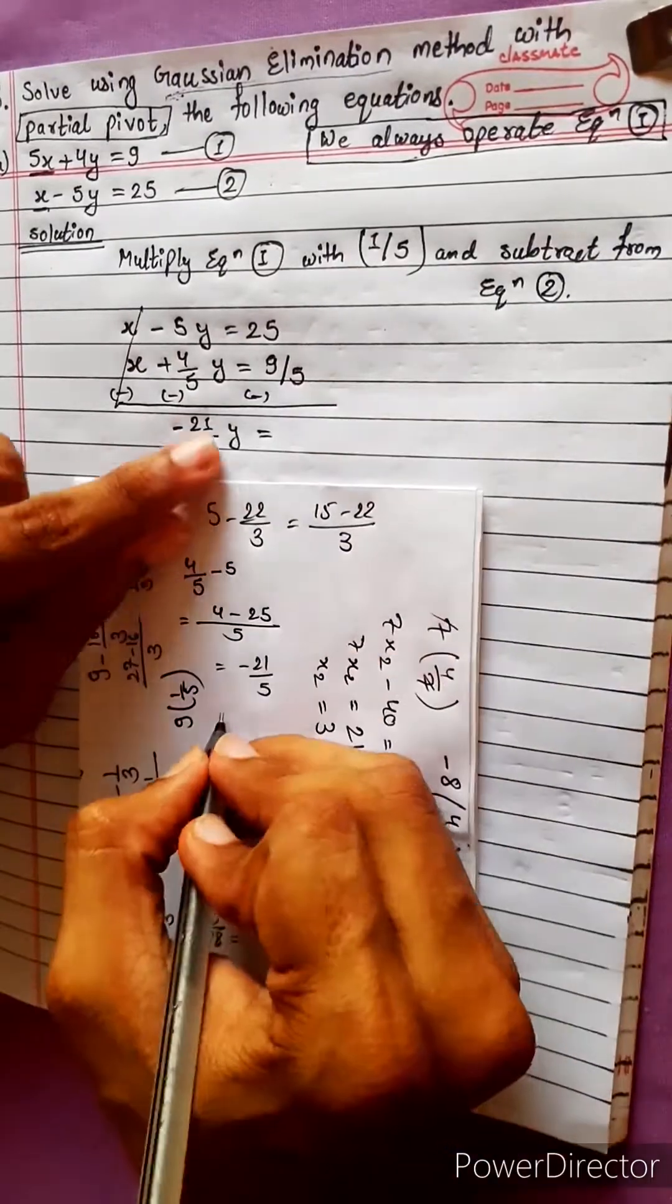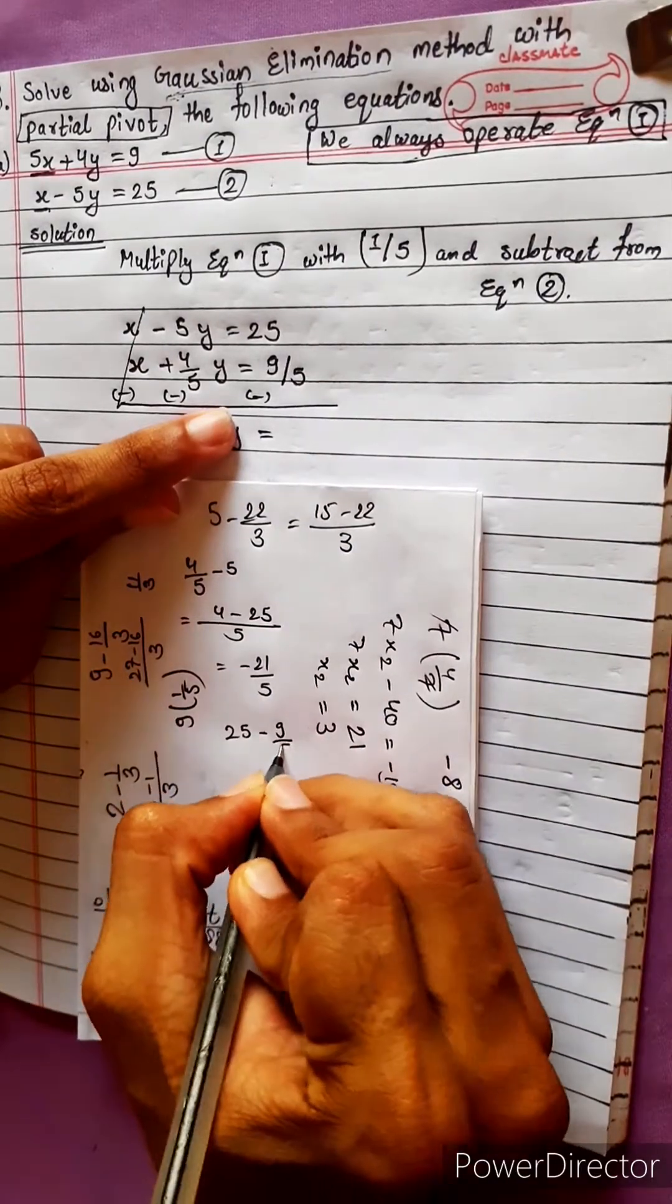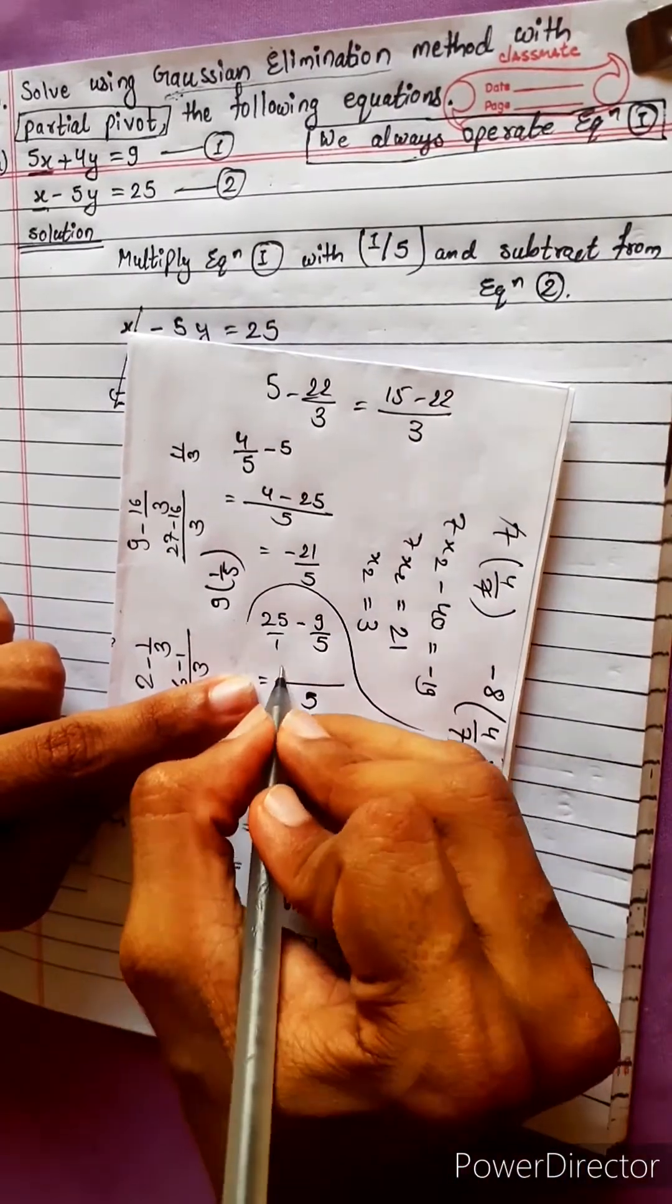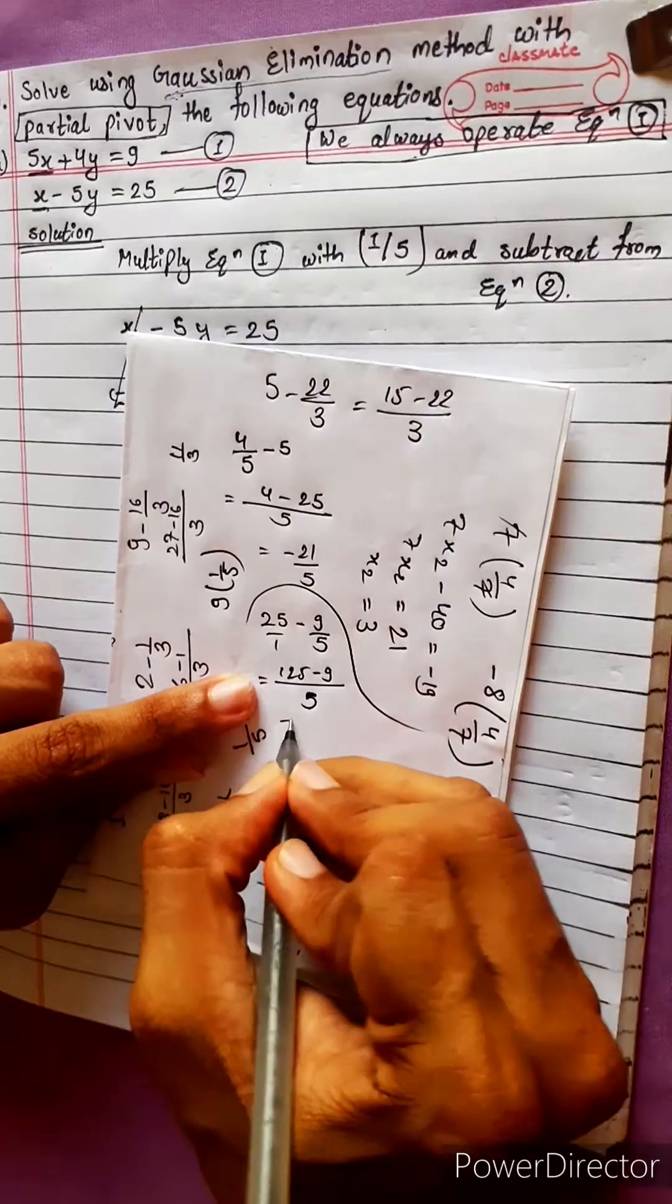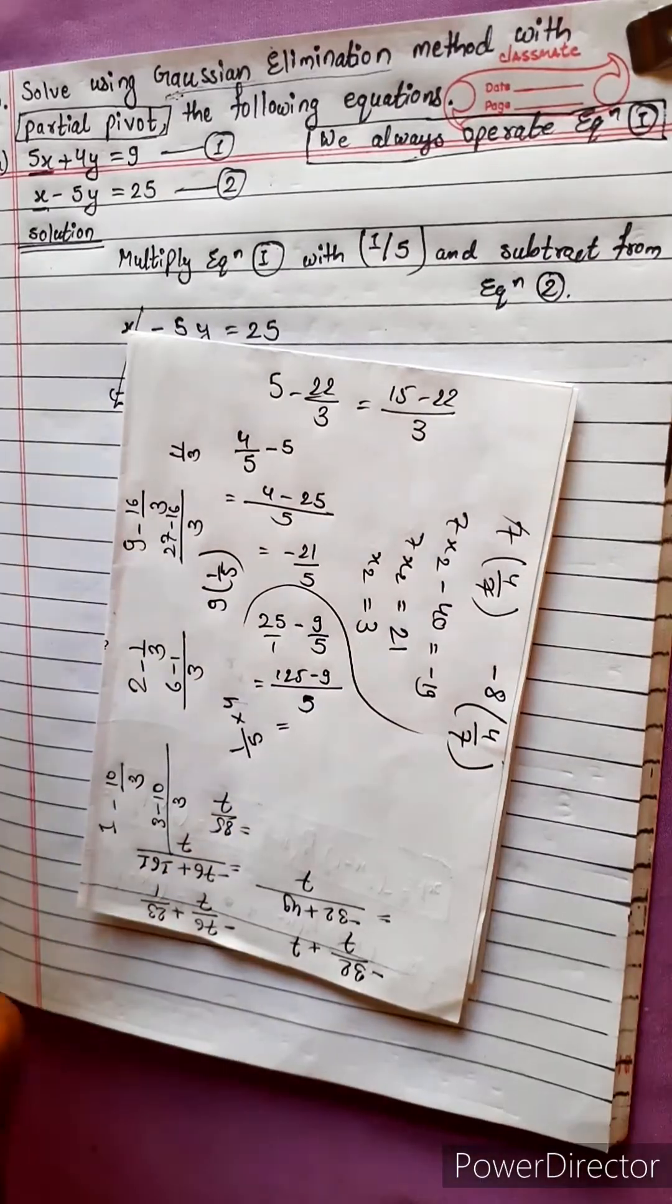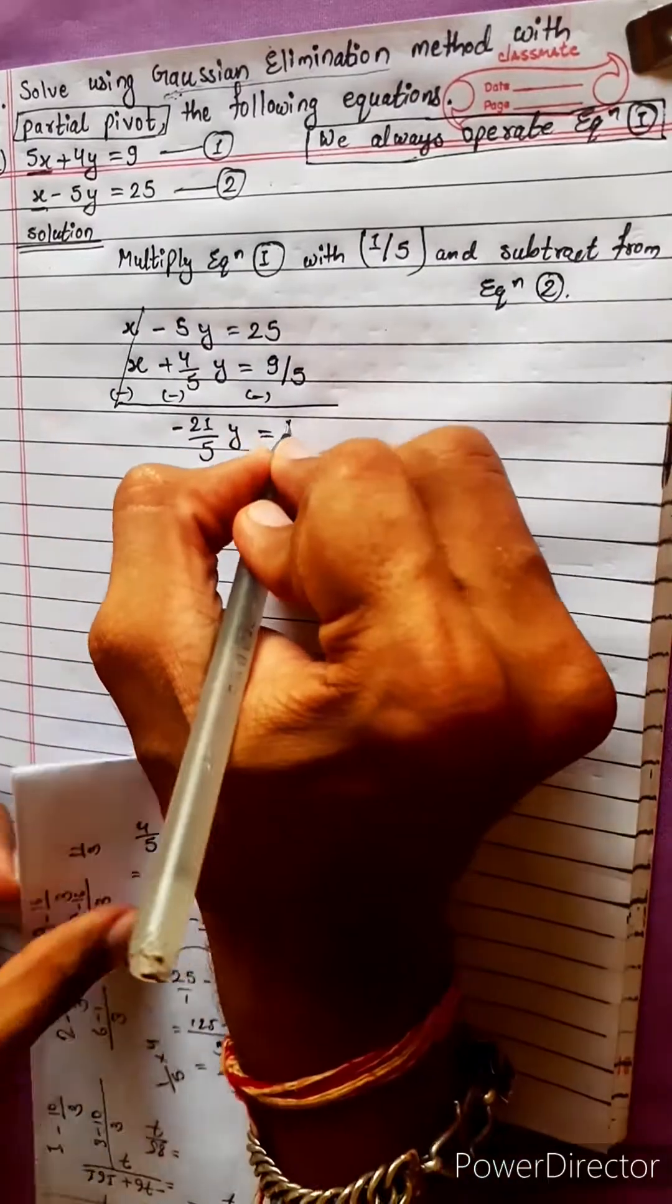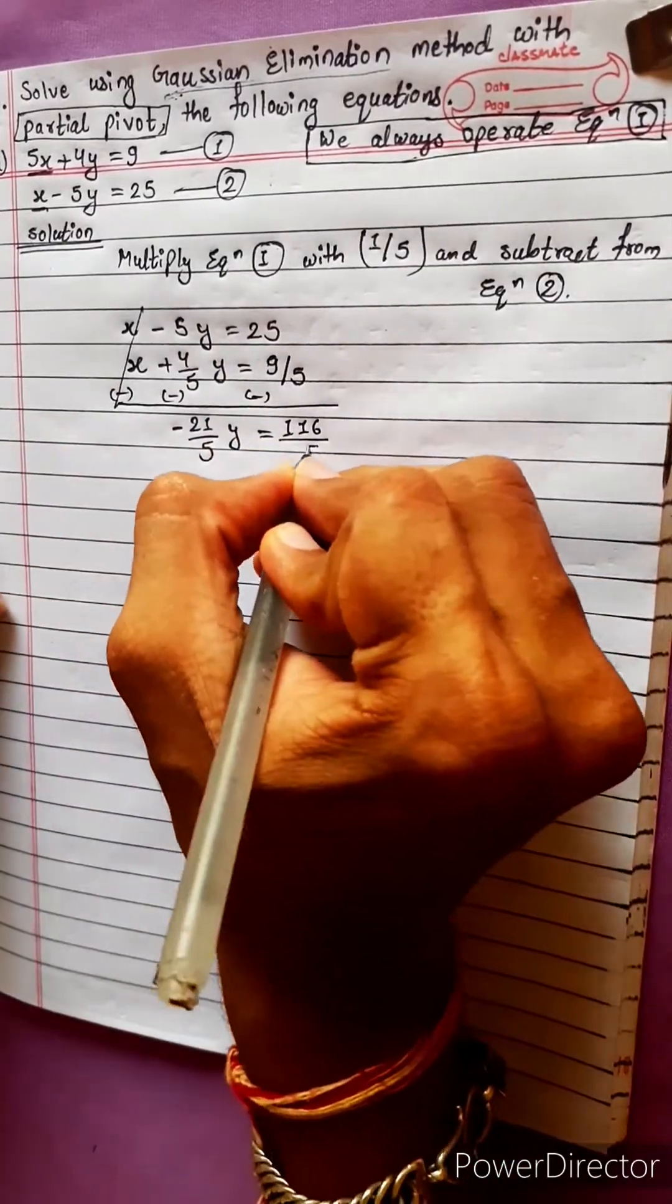Equals to 25 minus 9/5. Taking LCM: 25 into 5 is 125 minus 9 equals 116, divide by 5.